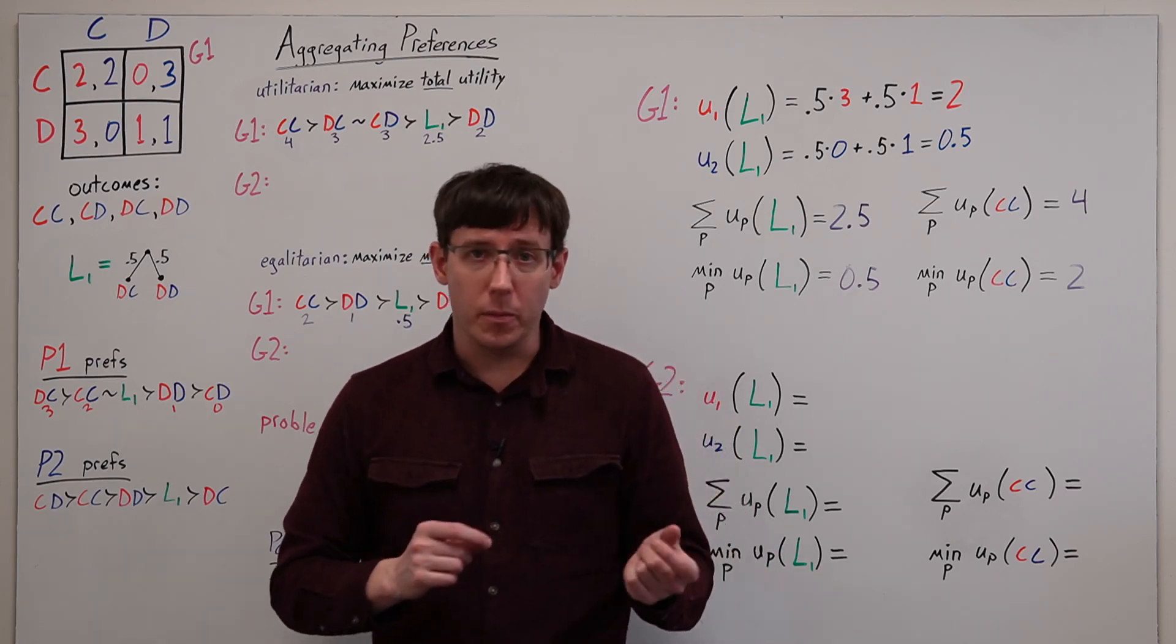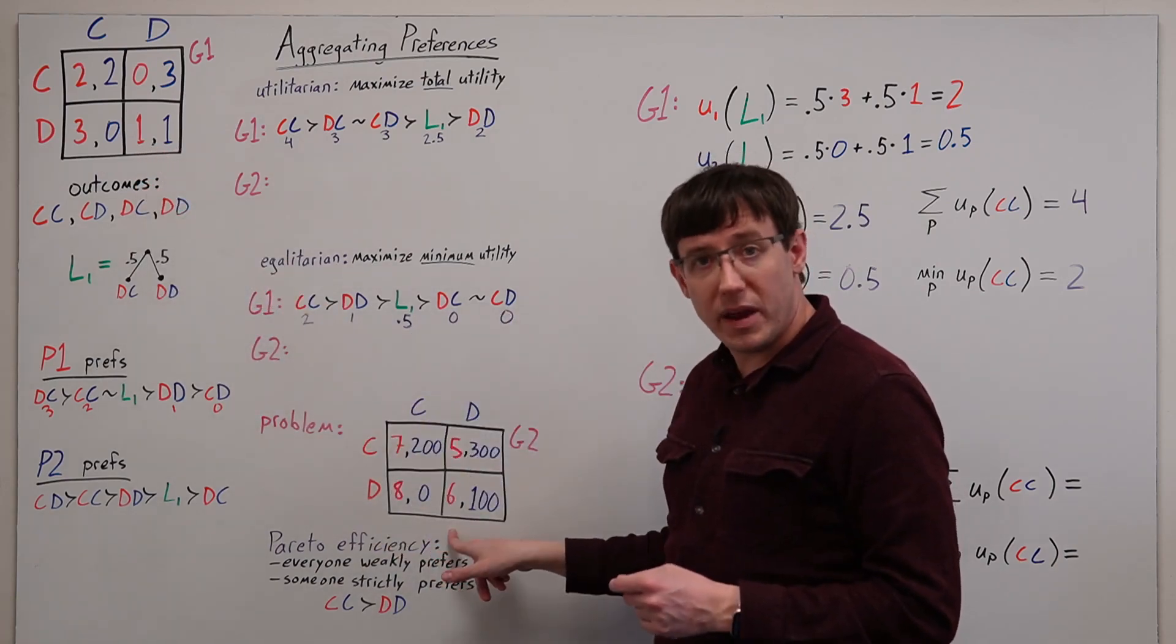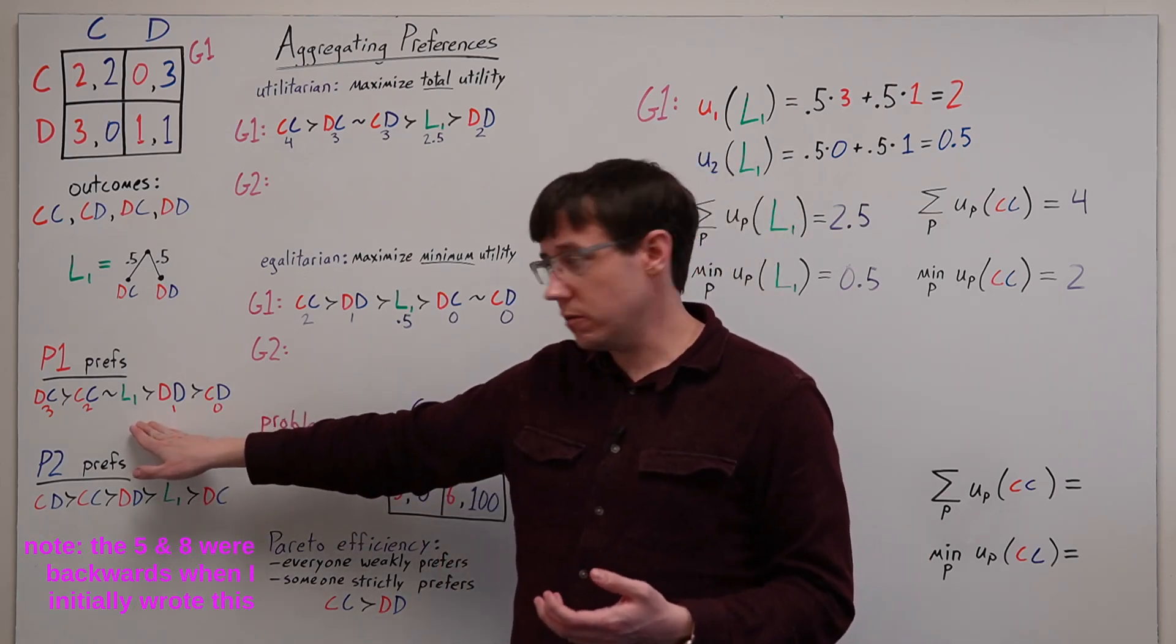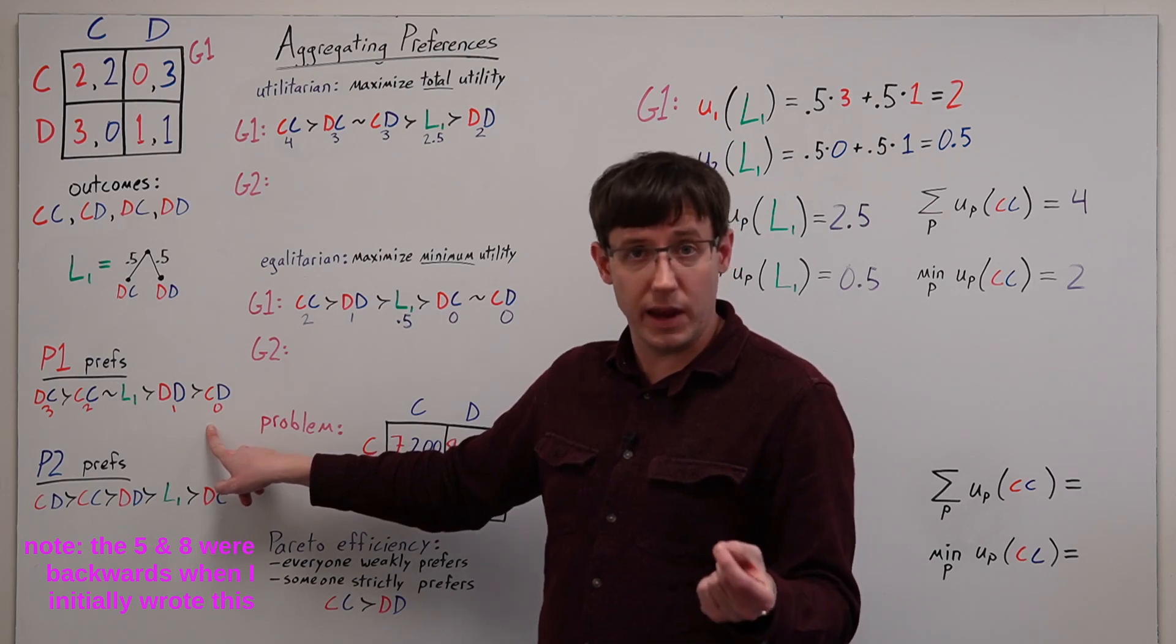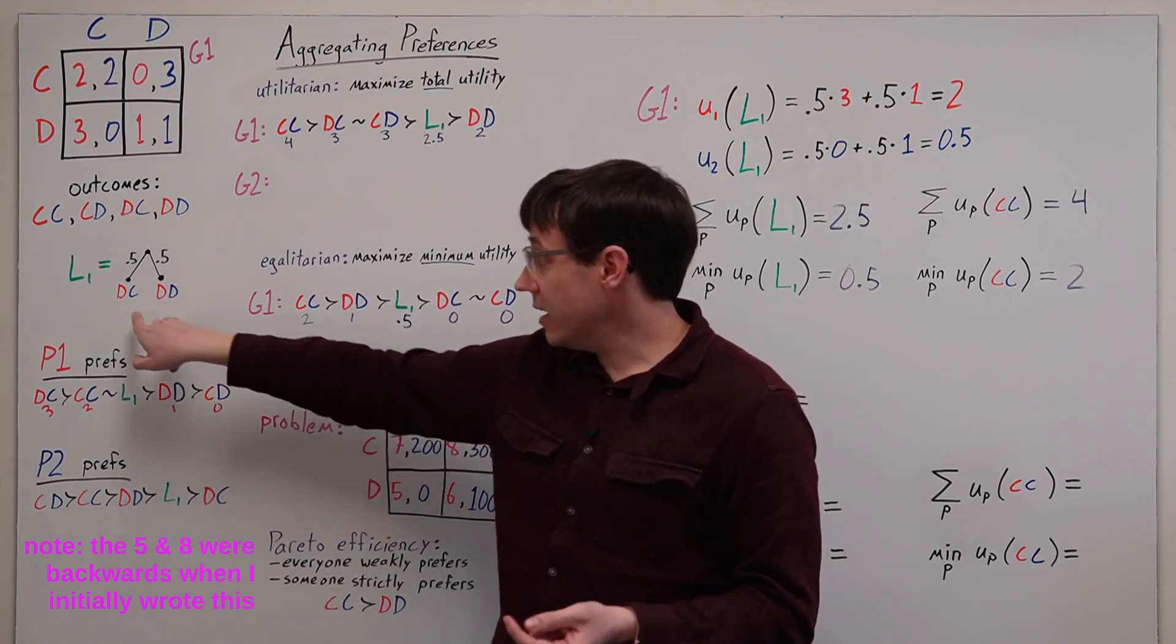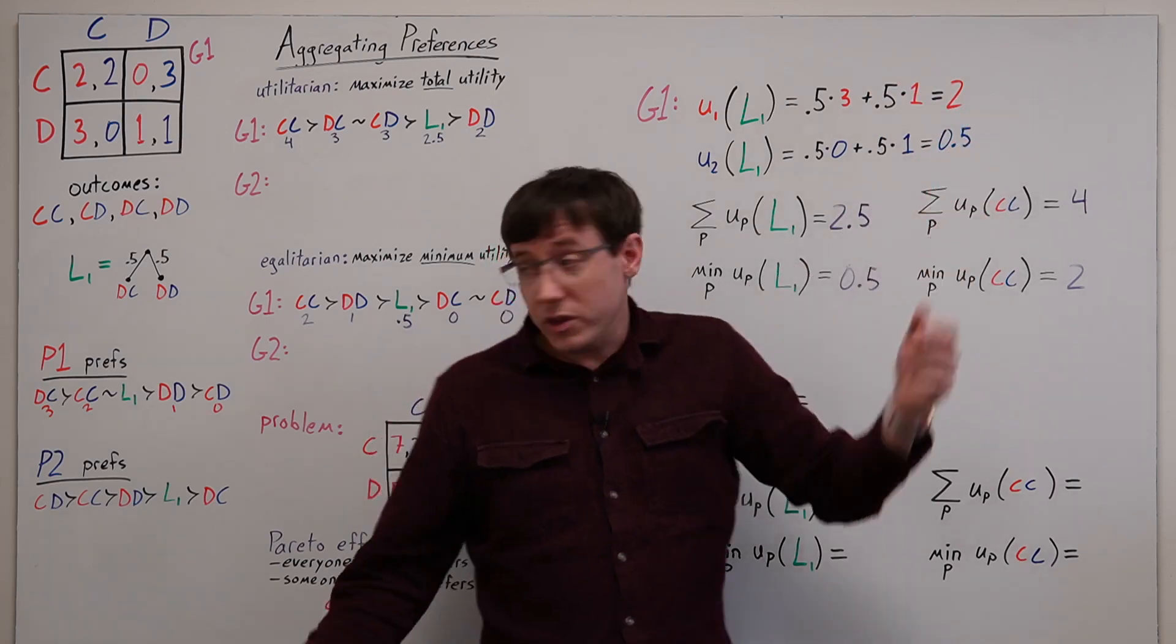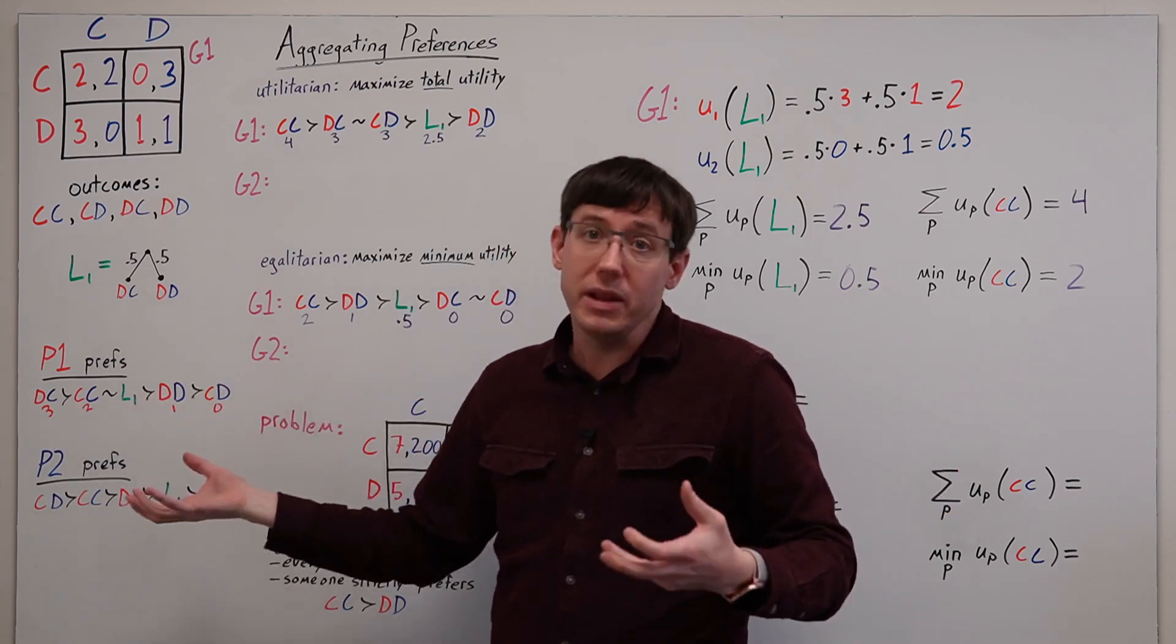And we can illustrate the problem by a variation on our prisoner's dilemma payoff matrix. In this payoff matrix, I've added 5 to all of player 1's payoffs, but I actually haven't changed anything about player 1's preferences. The ordering over the outcomes when I've added 5 to all of the utilities is exactly the same. And that's even true when we insert lotteries into the ordering, because adding the same constant to every outcome in the lottery just adds that same constant to the expected utility calculation. And so the utility of the lottery has also been increased by 5, and it falls in exactly the same place in the preference ordering.